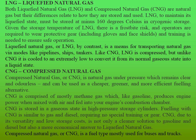CNG, or compressed natural gas, is a natural gas under pressure which remains clear and odorless, and can be used as a cheaper, greener, and more efficient alternative fuel. CNG is comprised mostly of methane gas, which like gasoline produces engine power when mixed with air and fed into the engine combustion chamber. CNG is stored in gaseous state in high-pressure storage cylinders. Fueling with CNG is similar to gas and diesel, requiring no special training or gear. CNG, due to its versatility and low storage cost, is not only a cleaner solution to gasoline and diesel but also more economical compared to liquefied natural gas. CNG is a fuel type mostly used for buses and trucks as well as for cars.